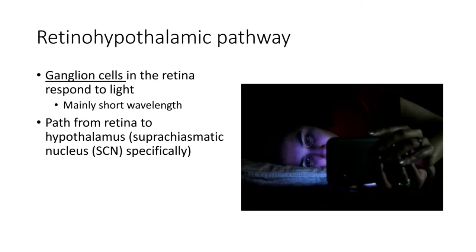There are ganglion cells in the retina that respond to light. Now you remember the ganglion cells, there are actually a couple of cells down the chain. The photoreceptors are the cells that we typically think of as being the photosensitive layer, but there are some ganglion cells that do respond to light. And they send axons to the hypothalamus. There's a specific region of the hypothalamus, the SCN or the suprachiasmatic nucleus specifically that they send them to.